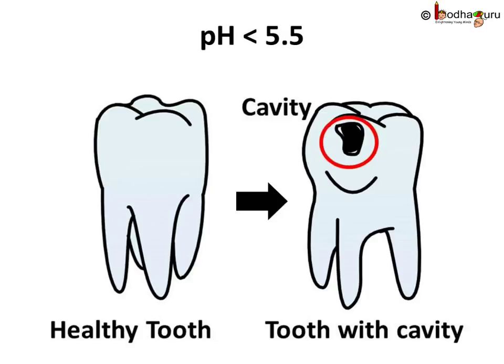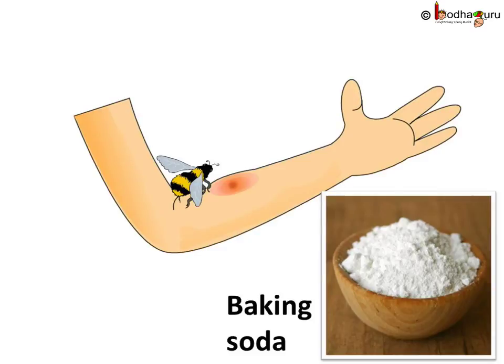Tooth decay starts when the pH of the mouth drops below 5.5. The tooth enamel is mostly made of calcium phosphate, and the acid produced by bacteria can corrode it. A pH below 5.5 means the presence of acid, so we use toothpaste, which is basic in nature, to increase the pH of the mouth.